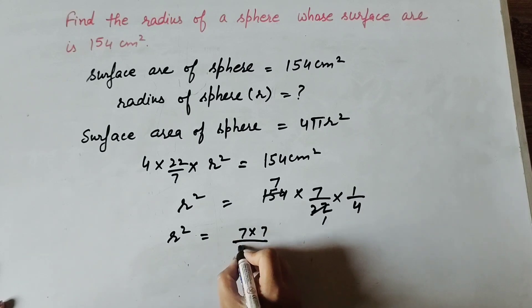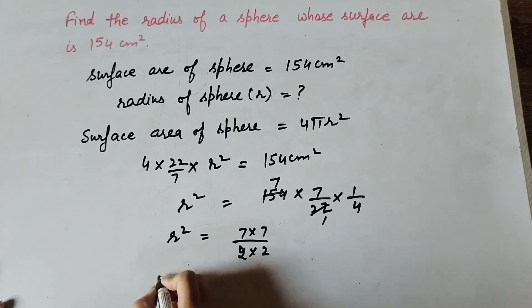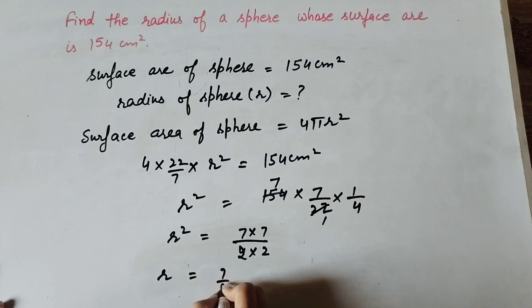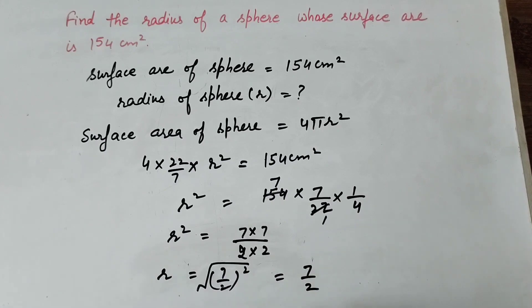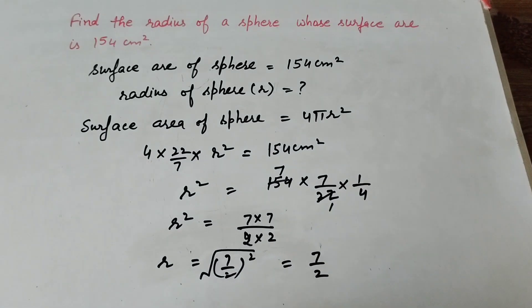7/4. We write it as 2 times 2, so r equals square root of (7/2)². r equals 7/2, and 7 divided by 2, we get the answer 3